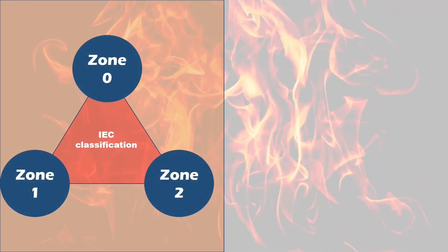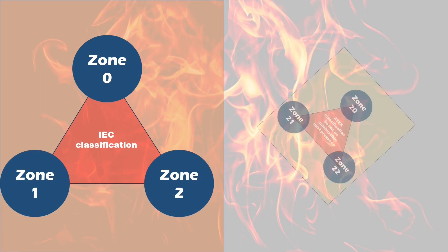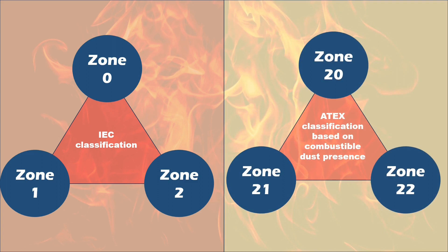We've now learned about Zone 0, 1, and 2, which are defined by the IEC. Three more zones — Zone 20, Zone 21, and Zone 22 — are defined in the ATEX Directive (Atmospheric Explosibles) and are mainly followed in Europe. The IEC has also included these zones based on combustible dust presence.